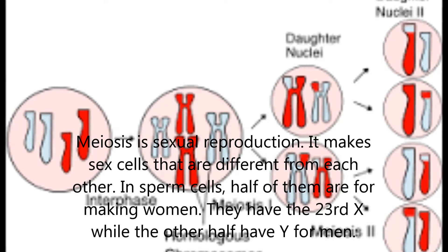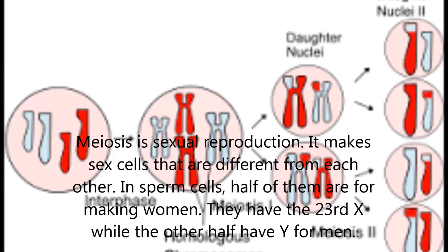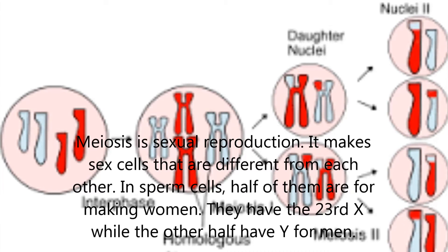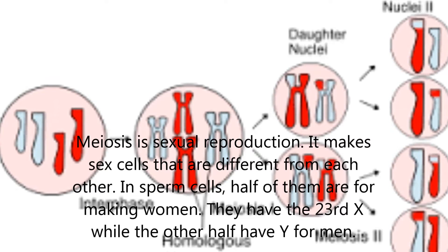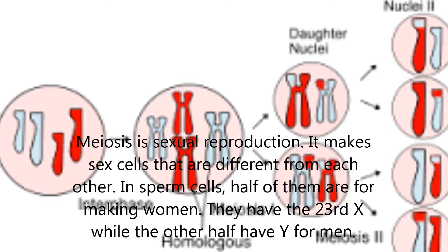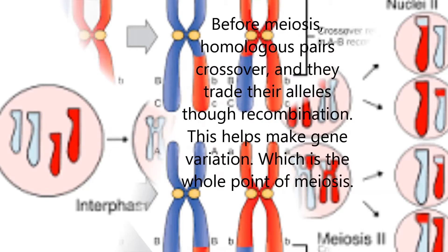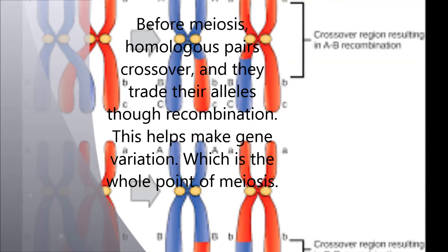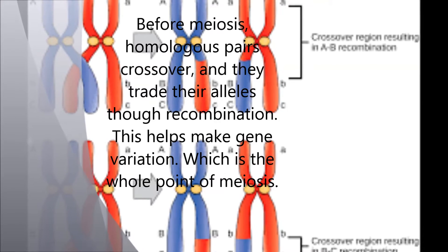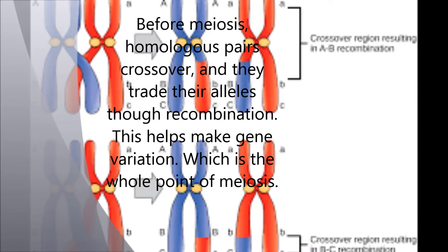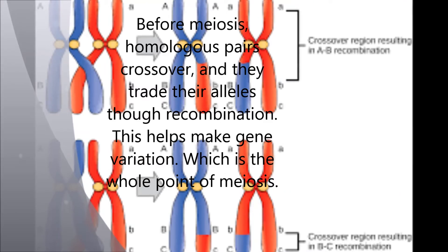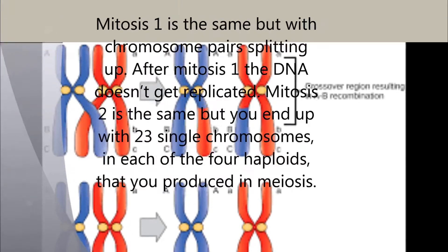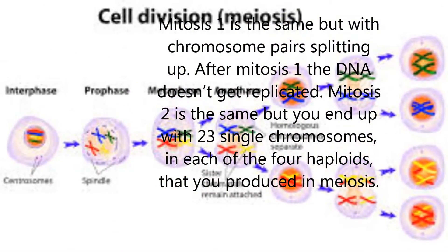In sperm cells, half of them are for making women — they have the 23rd X chromosome — while the other half have Y for men. Before meiosis, homologous pairs cross over and they trade their alleles through recombination. This helps make gene variation, which is the whole point of meiosis.